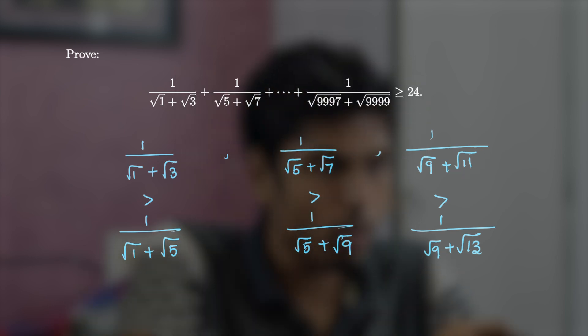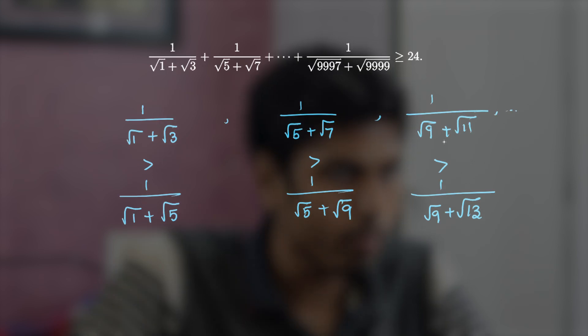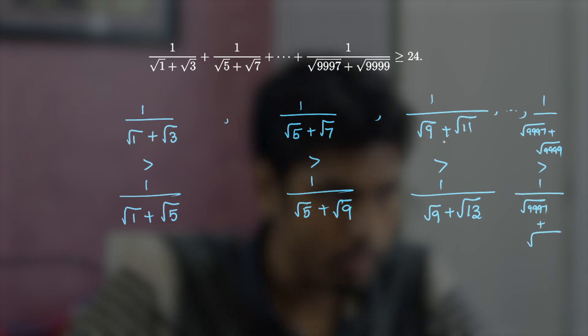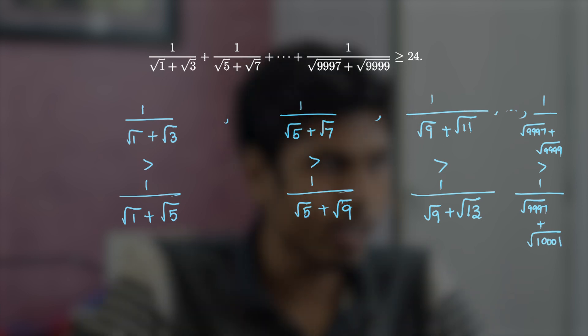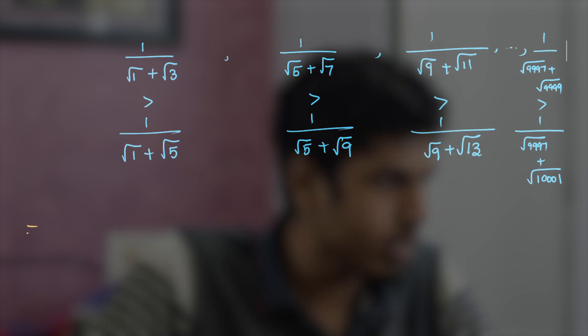This must be done throughout in order to have a proper telescoping series. So the final term would be 1 by root of 9997 plus root of 9999, which is greater than 1 by root of 9997 plus root of 10001. Now, let's add all these inequalities.